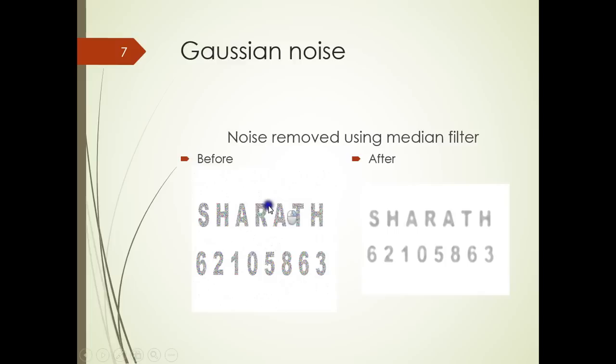The next is Gaussian noise. Gaussian noise is similar to salt and pepper noise but it introduces color pixels as well and the parameters could be different. The same kind of median filter can be used to filter the Gaussian noise as well. There are other noises that could be present in an image — Poisson noise and speckle noise — and we can use various techniques including median filter to remove those noises as well.